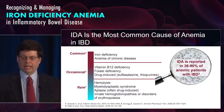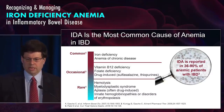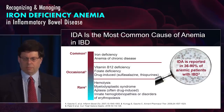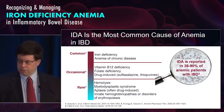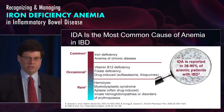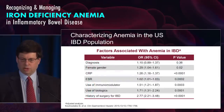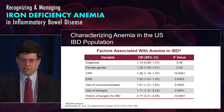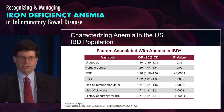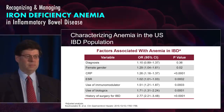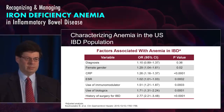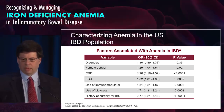Hemolysis and myelodysplastic syndrome have been associated with the use of anti-TNF therapy and others. So when seeing anemia, the first thing is to ask: how severe is it and what's the cause? If you look at the characterization of anemia in the United States and the factors associated with it, when you see the patient in the office, what are the things you have to look at?